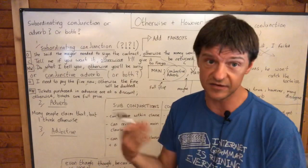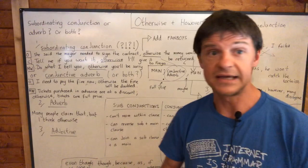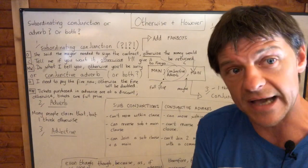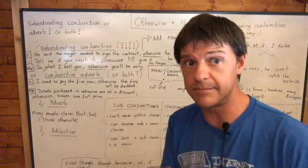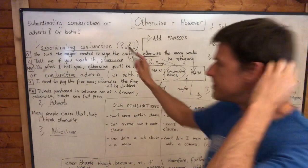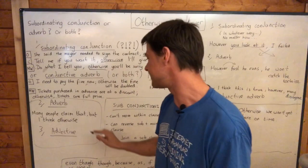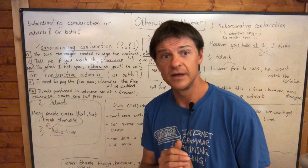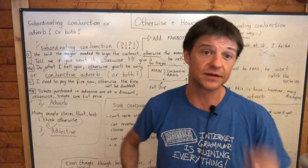Please share your ideas about this. If anyone has information about 'otherwise' or an argument that it genuinely is a subordinating conjunction, put it in the comments — I'll be very interested. I can't see any reason for calling it that; I can only see good reasons for calling it a conjunctive adverb. Do remember that 'otherwise' has other functions too: it can be a simple adverb — 'many people claim that, but I think otherwise,' where it modifies the verb 'think.' It can also be an adjective, describing a noun.